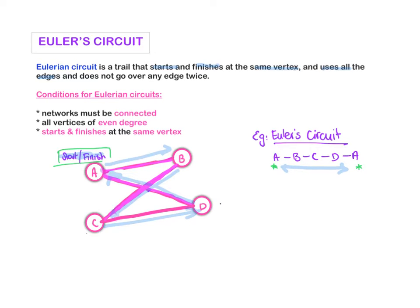For this to be possible, for you to be able to have a Eulerian circuit, it has to be connected, and all vertices have to be of even degree. If we look at the degrees of these, this one's degree of 2, degree of 2, degree of 2, and degree of 2. So they've all got to be even. And obviously, it wouldn't be a circuit unless we started and finished at the same vertex.